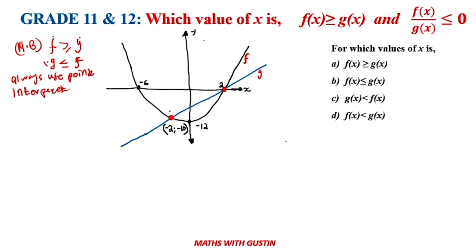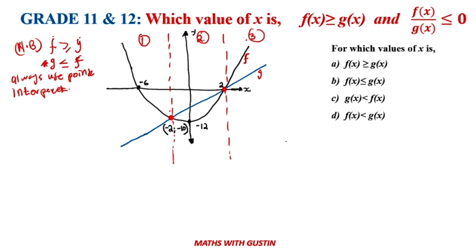This means the graph of f is on top of the graph of g, and where g is on top, g is less than f. So we divide our Cartesian plane into three spaces using the points of intersection. Reading from left to right, we put a dotted line at the first point and another at the second point, dividing the graph into space one, space two, and space three. Please take note of this.